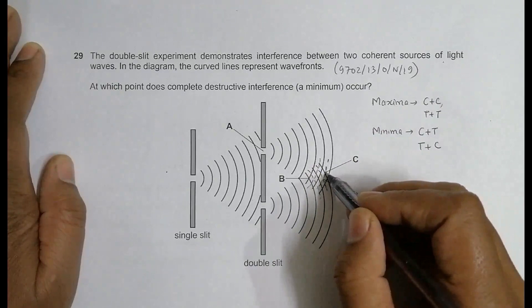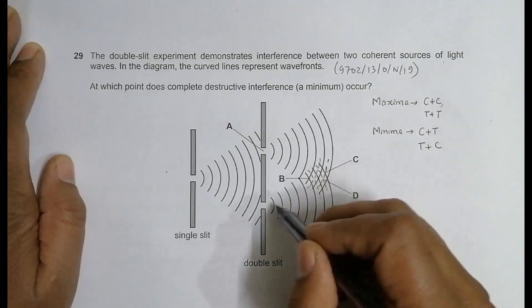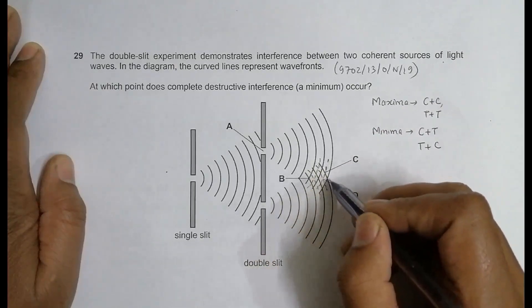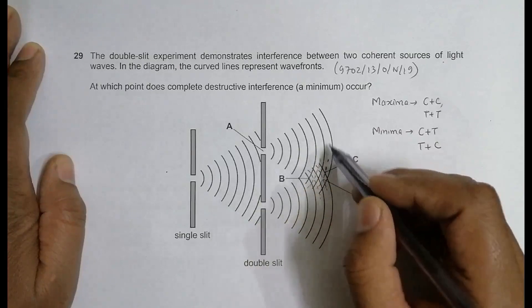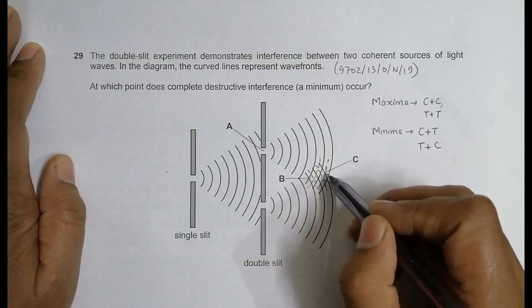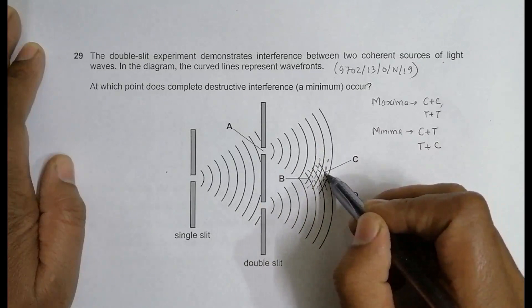Then comes C. At C, due to the wave from here there is crest, and due to wave from here there is a trough. So crest and trough means destructive interference or minimum.